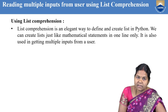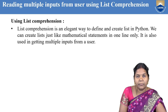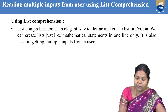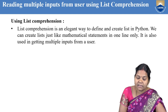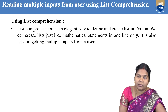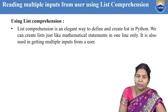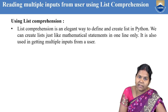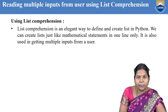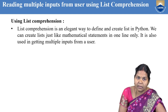List comprehension is an elegant way to define and create a list in Python. We can create a list just like mathematical statements in one line only. You read the input, split it, map it, and store it into a list — all in a single line. Using list comprehension, one example is reading multiple inputs from the user.